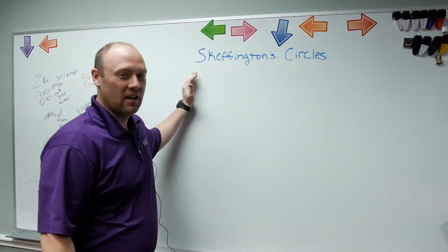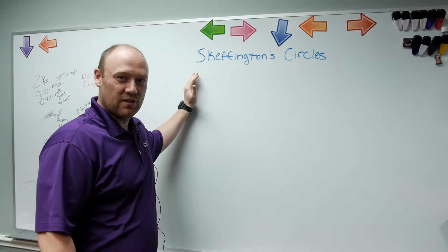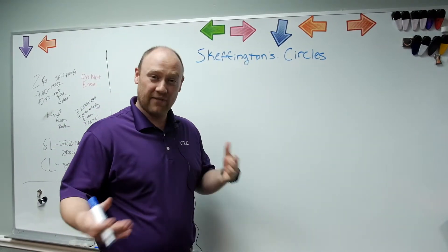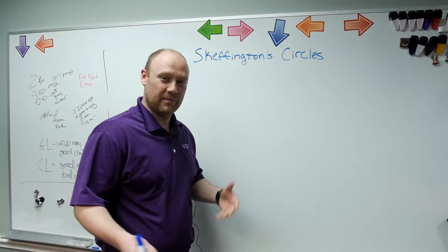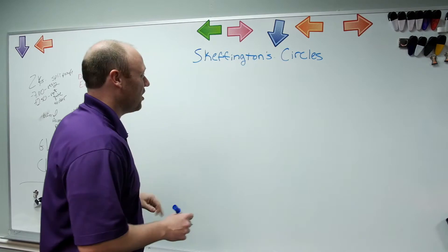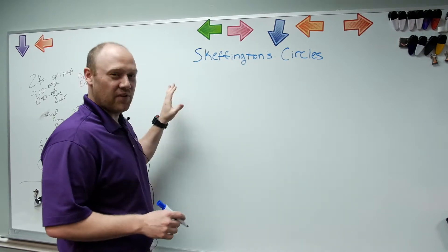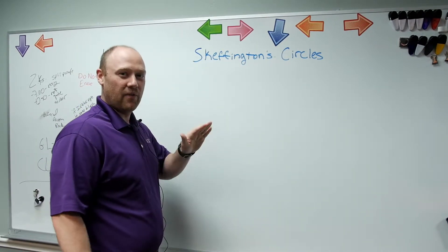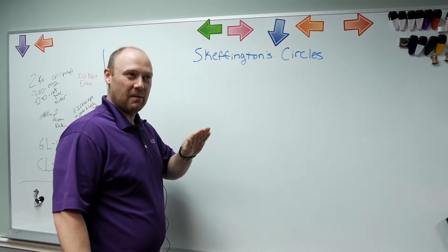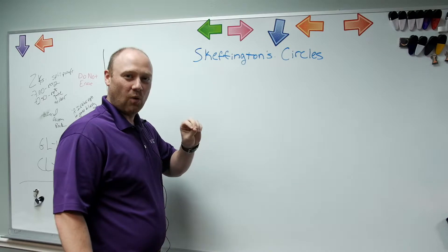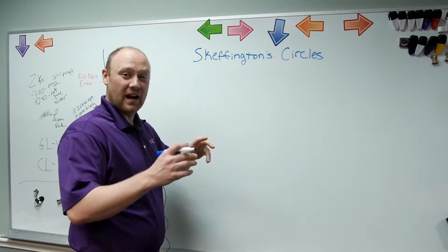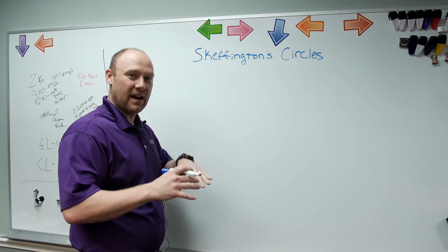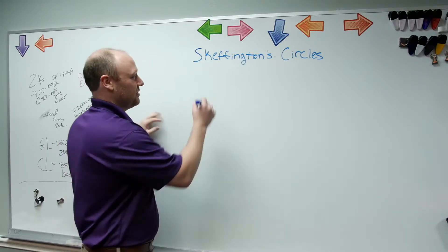Skeffington is considered the founder of modern-day behavioral vision therapy. His model of vision is what we follow. Basically you're looking at four Venn diagrams and it breaks down how we view the visual system.